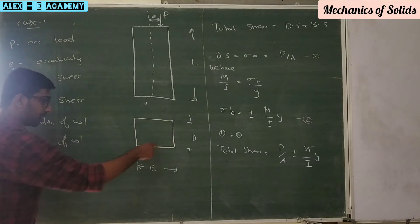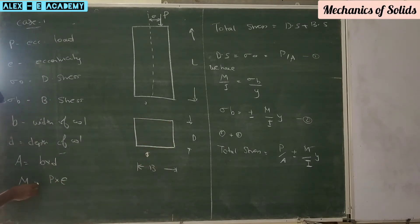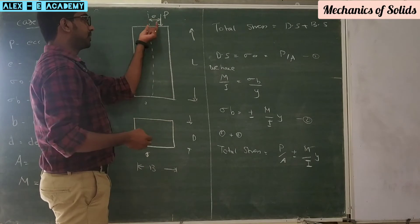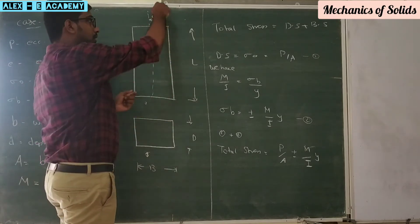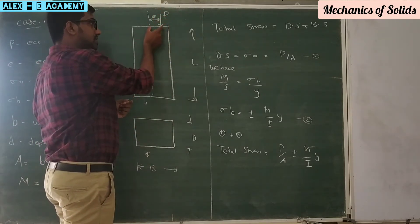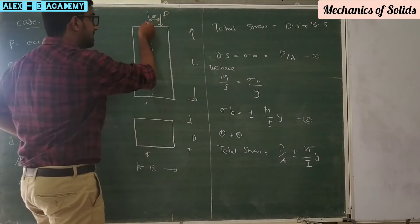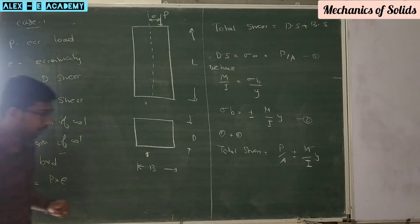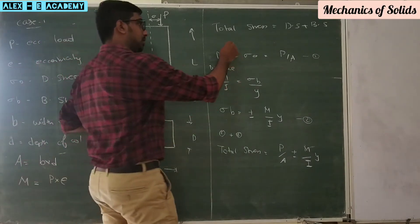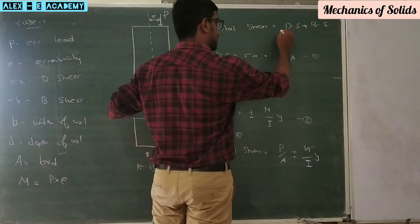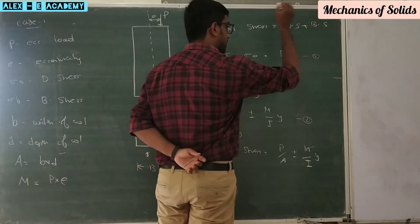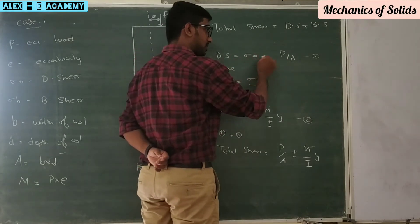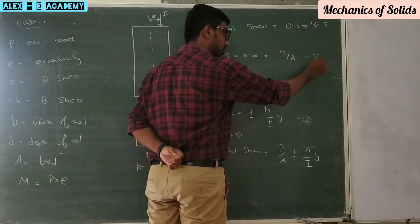Area of cross-section for a rectangle is B into D. Capital M is the bending moment equal to load into the real distance, that is M equals P into E. The total stress is equal to direct stress plus bending stress, which is sigma naught equals P by A plus or minus bending stress.